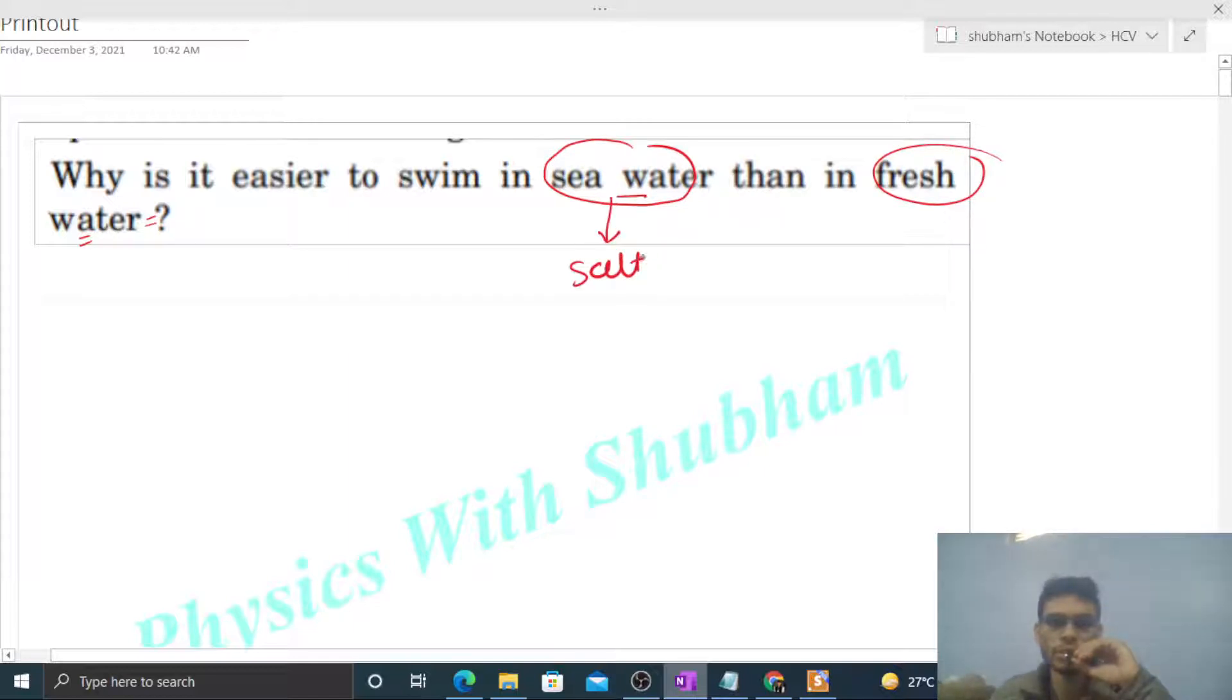You can see seawater has salt in it, and because of the presence of salt in seawater, the density of seawater will be greater than the density of freshwater. And if the density of seawater is higher, then the buoyancy force by the seawater will be higher.